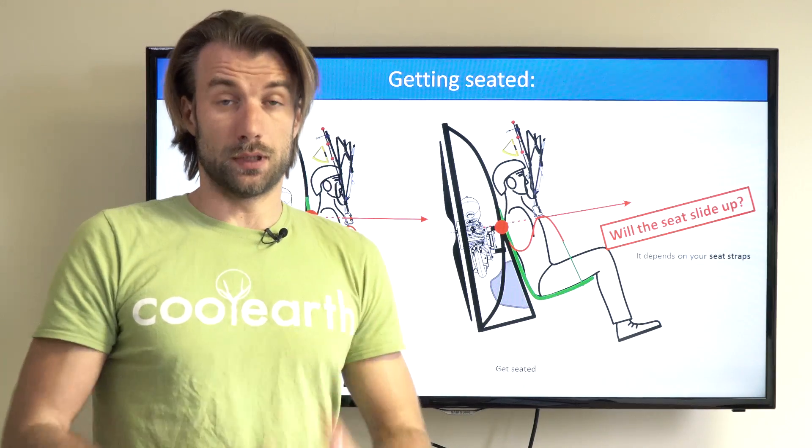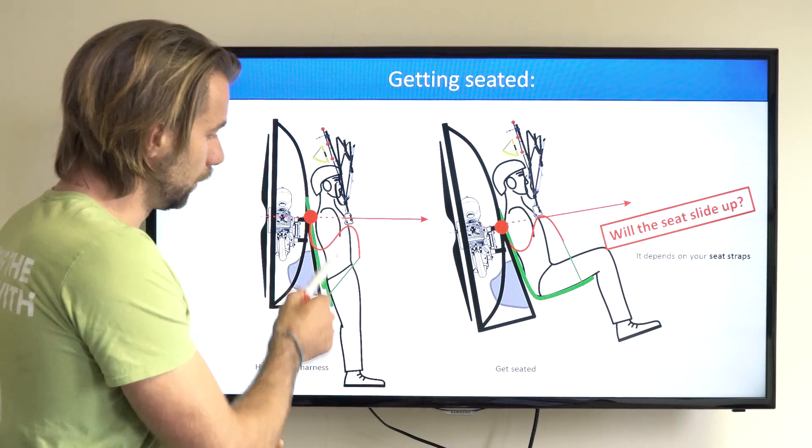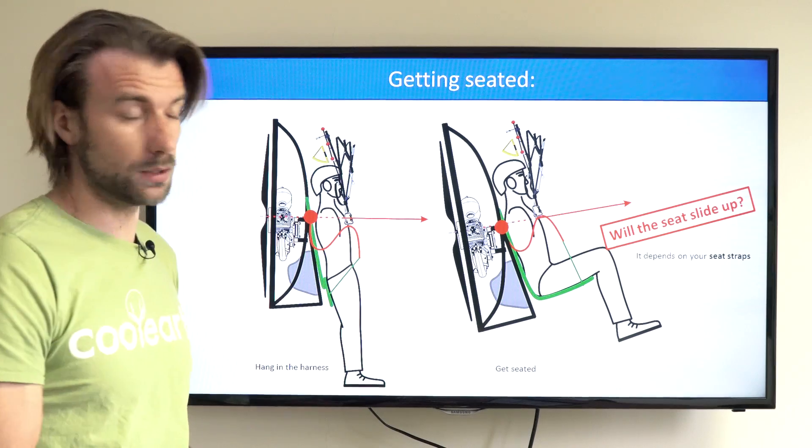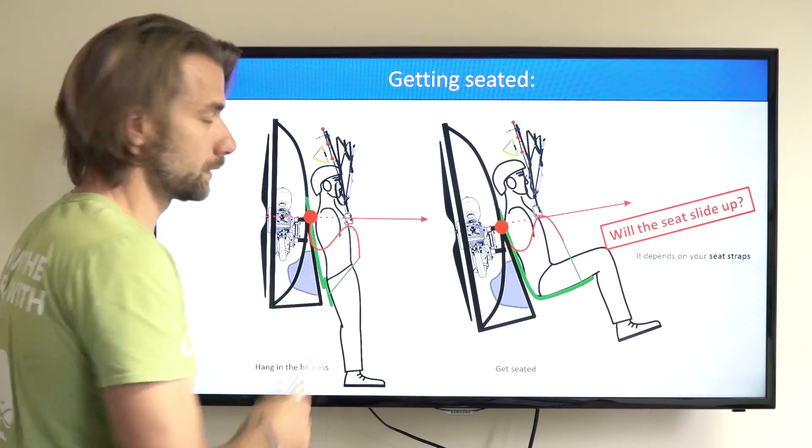First, the leg straps that determine how low you will sag in the harness and the position of the seat board strap itself.